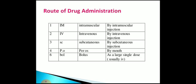Certain words are used to describe the route of drug administration: IM means intramuscular injection; IV means intravenous injection; SC means subcutaneous injection; PO means per os, taken by mouth. Bolus means a large single unit dose, usually given IV, where certain infusions or fluids are injected directly into the bloodstream as a single large dose, variable from 100 ml, 500 ml, and 1000 ml or 1 litre.